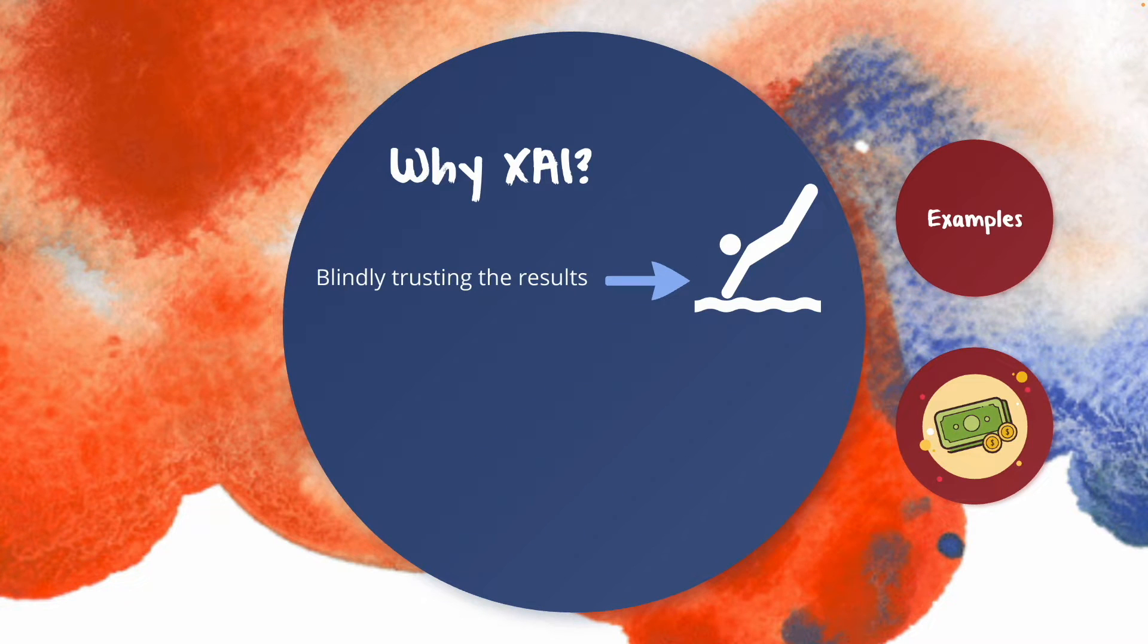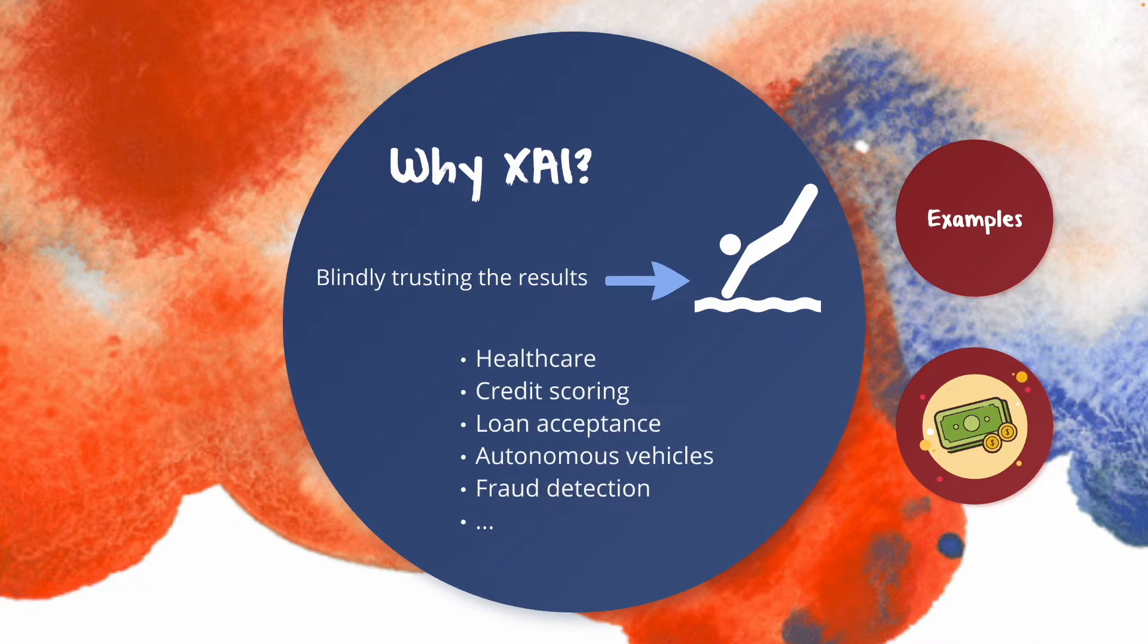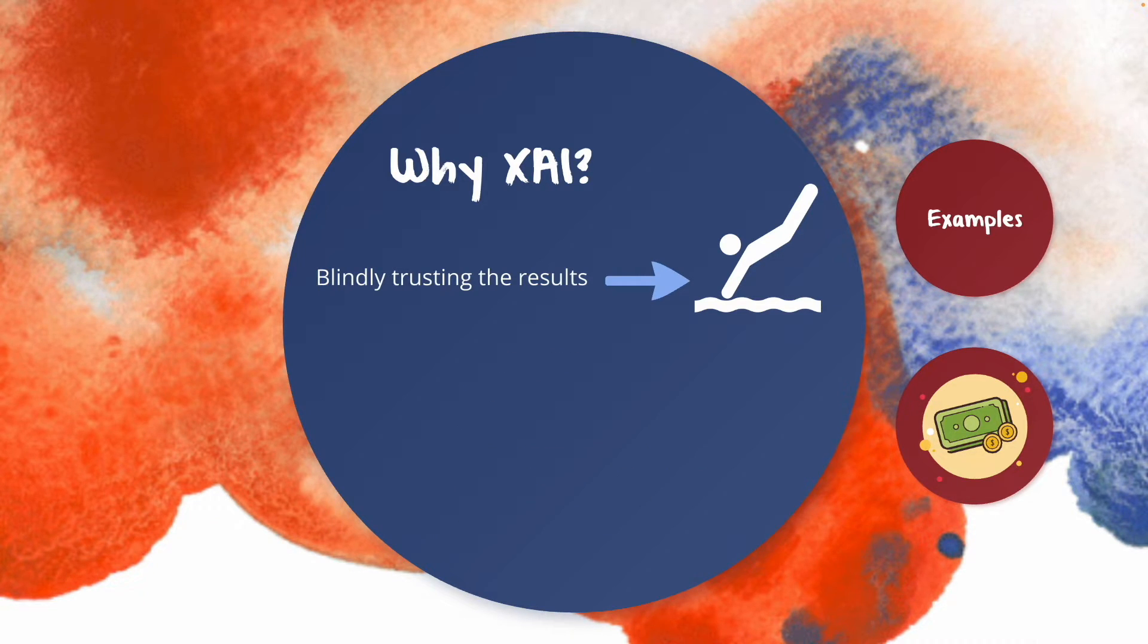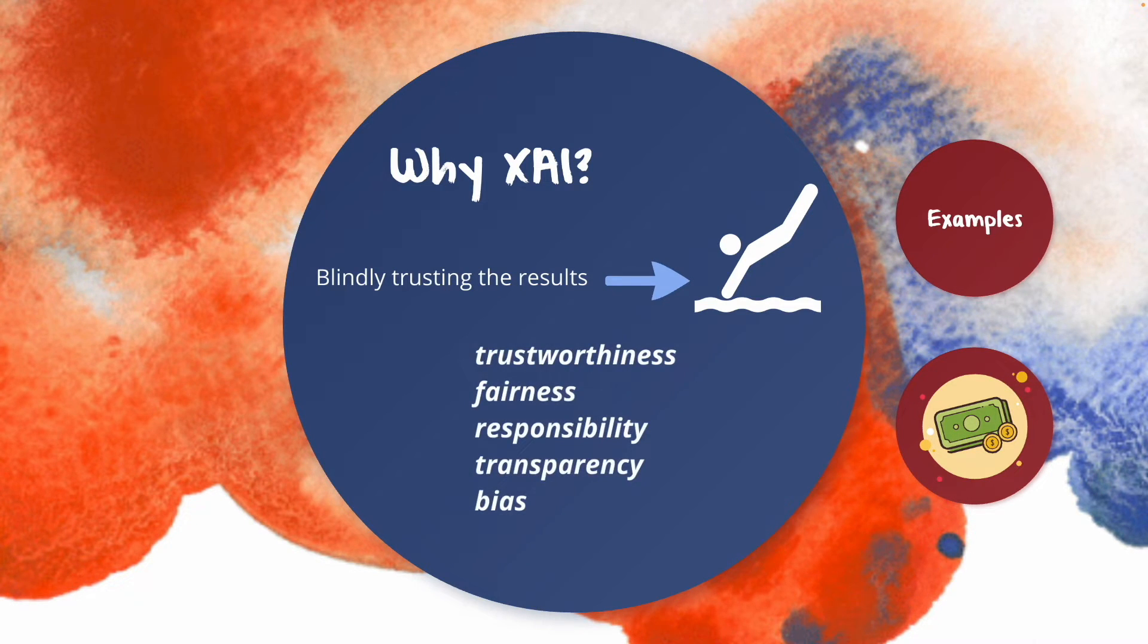Now let's look at why is explainable AI important and needed also. Blind trusting the results of AI is like diving head first to dark lake without knowing or seeing under the surface. It's very dangerous and it may cause some very harmful consequences. So today AI is in the production of various fields such as healthcare, credit scoring, loan acceptance, autonomous vehicles, fraud detection, recyclable object classification and more. And main concerns or main aspects that we should care are trustworthiness, fairness, responsibility, transparency and bias.